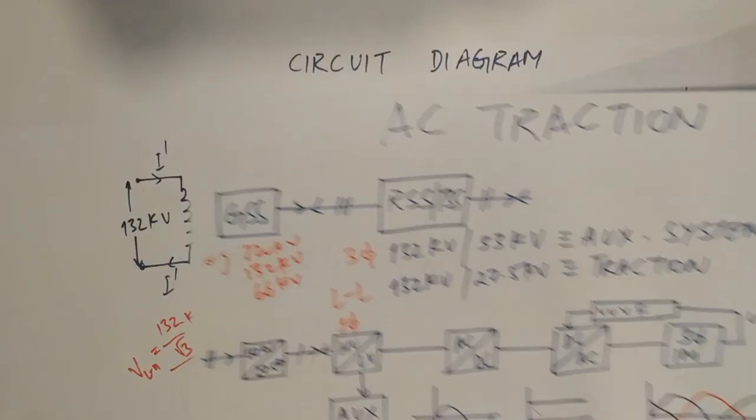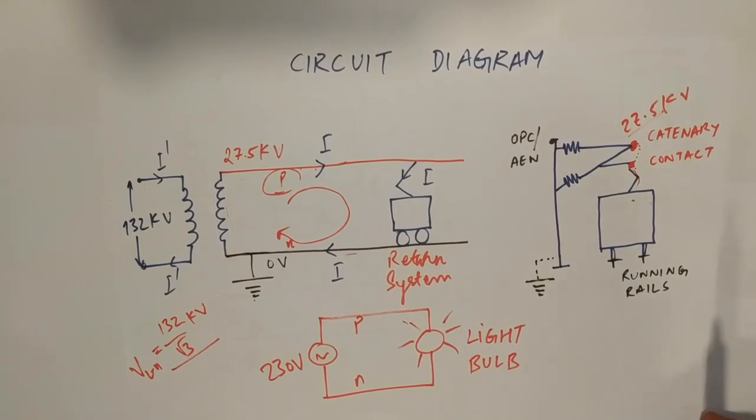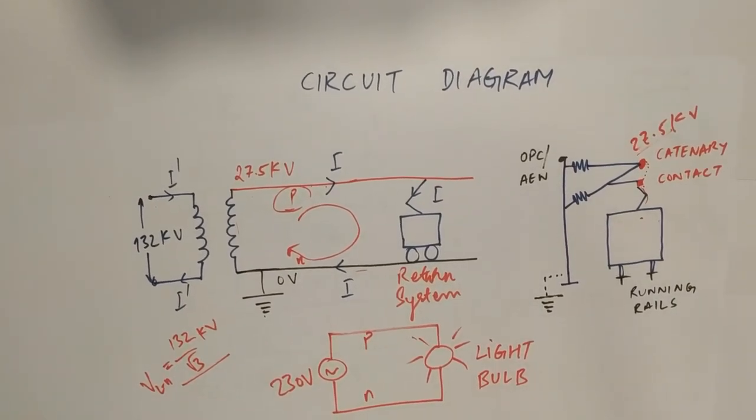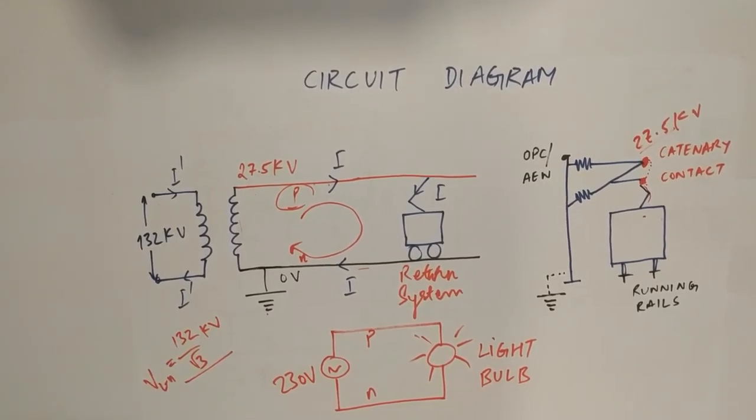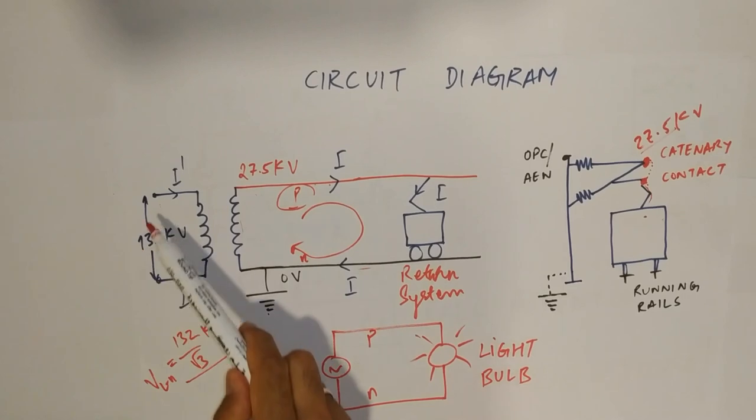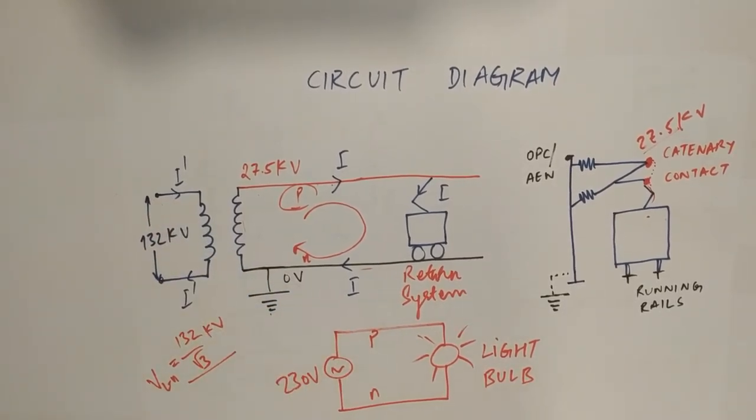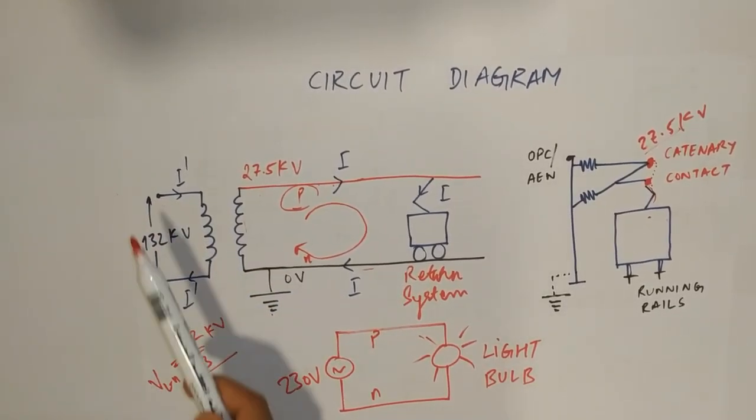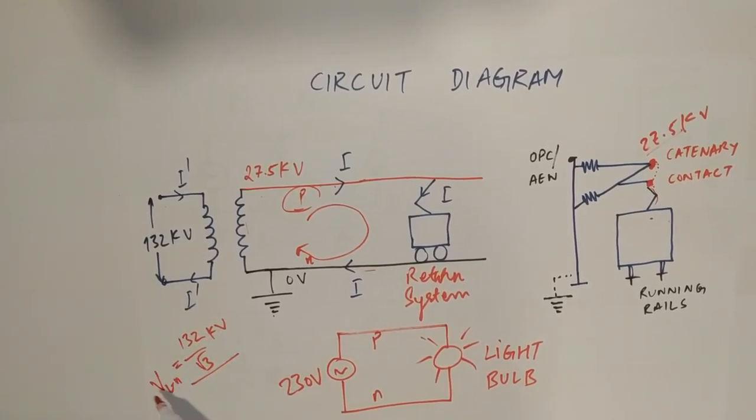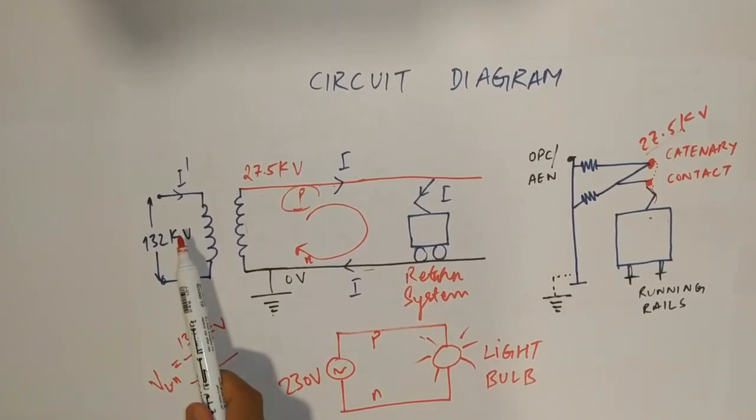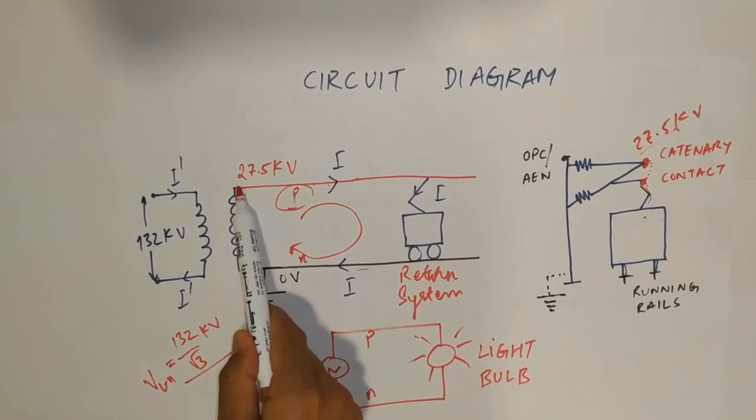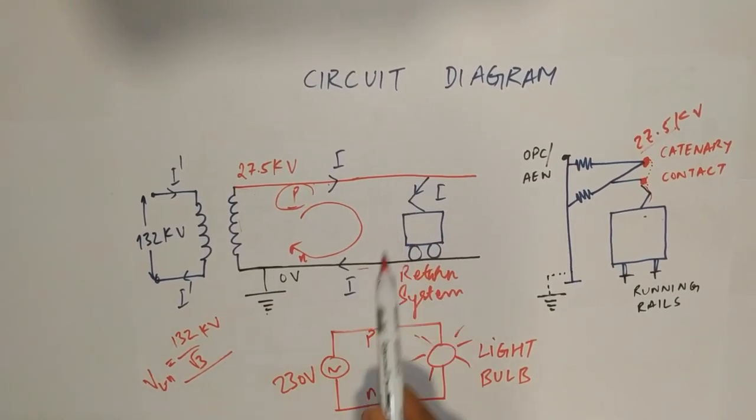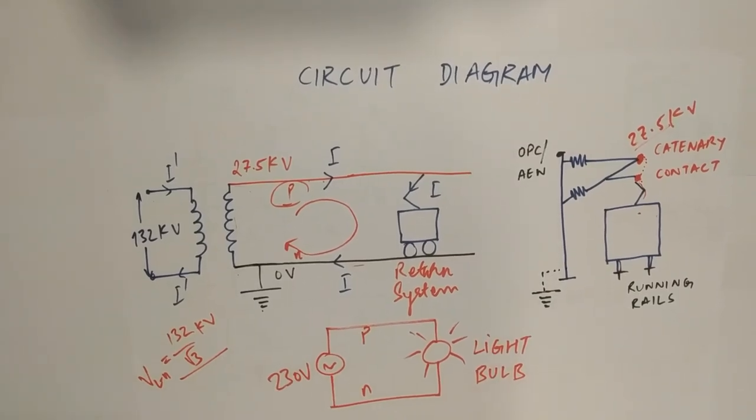Now, I will show you a simplified circuit diagram for how this system works. So, once we have got this 132 KV in the high voltage side of the transformer, this 132 KV is line to line. If someone asks you what is the line to ground voltage, then you have to show that it is 132 by root 3. This high voltage is converted into low voltage of 27.5 KV which is being fed to the overhead contact system and this is your return system.